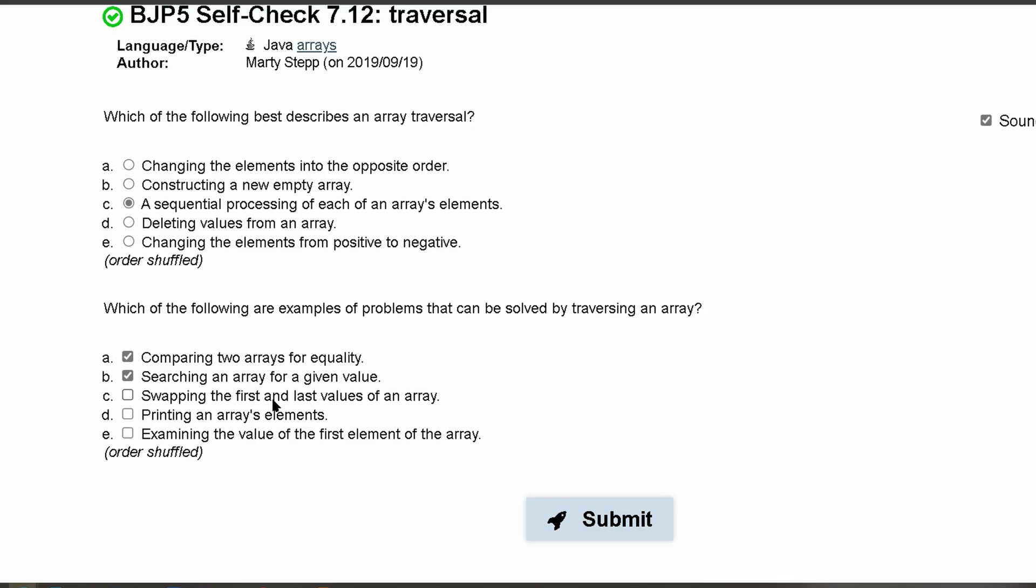Swapping is not necessarily what we're doing with traversing. Printing is something we can do. Examining the value of the first element of the array is not technically traversing, so we're not going to click that. These should be the ones selected.